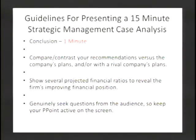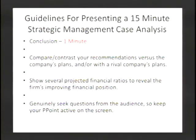Then one minute on conclusion — it's always good to start strong and finish strong. A great way to conclude is to compare what you've just recommended the firm do for the next three years with what the firm is actually planning, or what a major rival is planning. Show three or four projected financial ratios — ROI, ROE, ROA, debt-to-equity — to demonstrate improvement in the firm's financial condition if they follow your three-year recommendations.